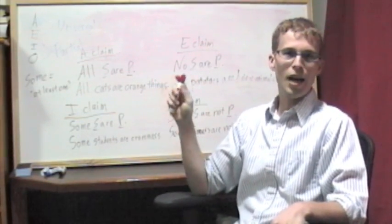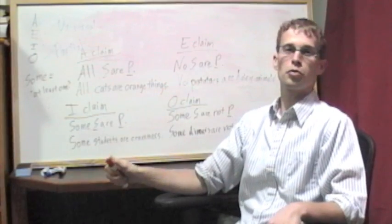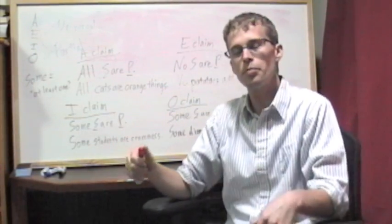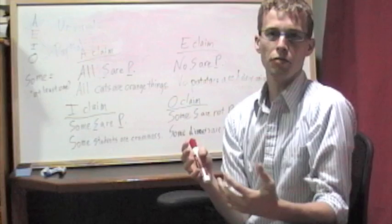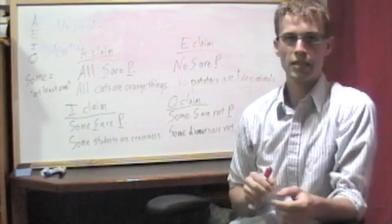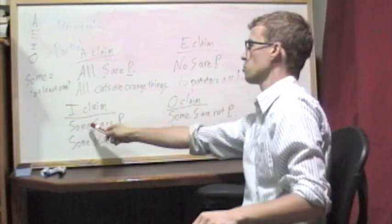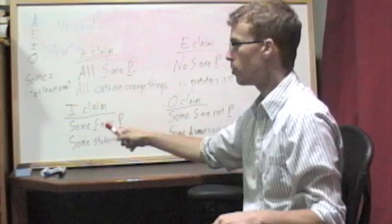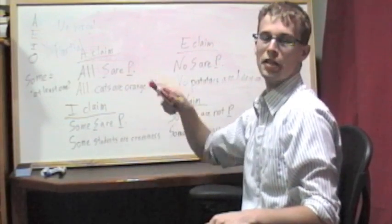The second two, I and O claims, are partial claims because they only say something about at least part of the members of a class. So just some of them, not necessarily all of them, are also members of the predicate class.